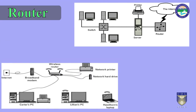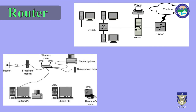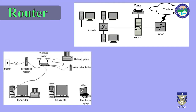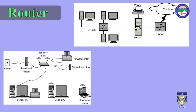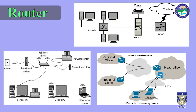The most familiar type of router are home and small office routers that simply pass data such as web pages, email, instant messaging, and videos between the home computers and the internet. An example of a router would be the owner's cable or DSL router which connects to the internet through an ISP, i.e. internet service provider. More sophisticated routers such as enterprise routers connect large business or ISP networks up to the powerful core routers that forward data at high speed along the optical fiber lines of the internet backbone. Though routers are typically dedicated hardware devices, use of software-based routers has grown increasingly common.